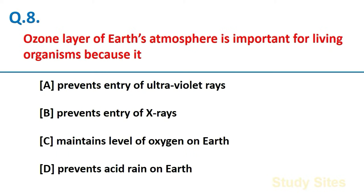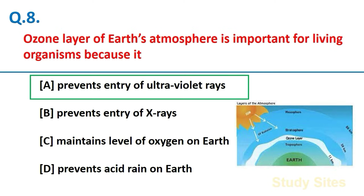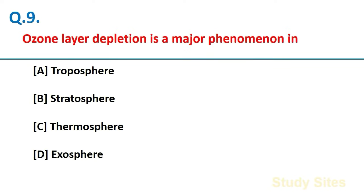Ozone layer of Earth's atmosphere is important for living organisms because it prevents entry of ultraviolet rays. Ozone layer depletion is a major phenomenon in Stratosphere.